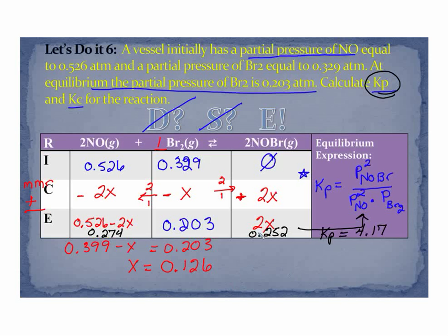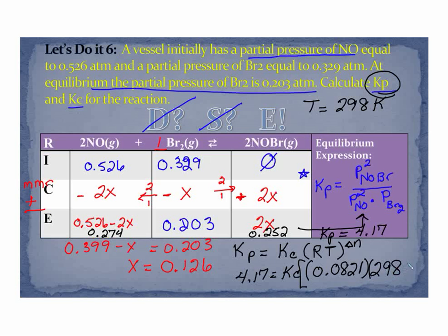We've done part of the problem. The question also asked us for Kc. We saw this equation earlier. The equation that relates the two is that K in terms of partial pressures is K in terms of molarity times our ideal gas constant times the temperature to the delta N. This question didn't give me a temperature, so let's just assume we're talking about 298 Kelvin. We have Kp, 4.17. Kc's our unknown. R, for this equation, is 0.0821.